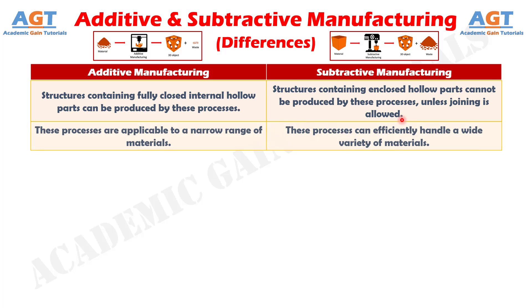Difference number 7. Additive manufacturing processes are applicable to a narrow range of materials, whereas subtractive manufacturing processes can be applied to a wider range of materials.